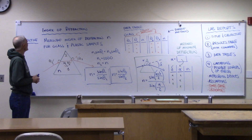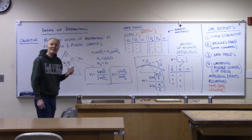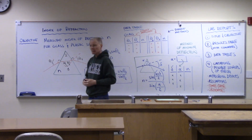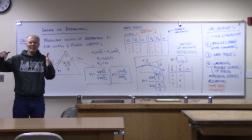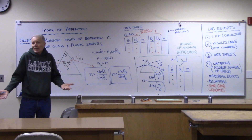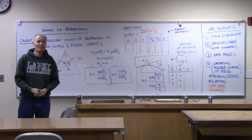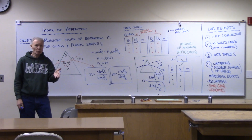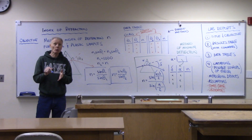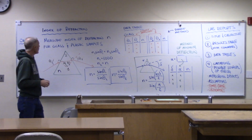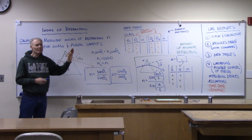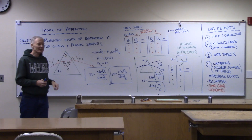Our first lab is looking at index of refraction. We talked about that in class today — when light travels through different materials, it's kind of a relay race of photons. The light traveling through is not at the same speed you'd have in a vacuum. Photons of light are interacting with molecules along the way, and that interaction process slows them down. Our objective for the day is to measure the index of refraction, little n, for some glass and plastic samples.